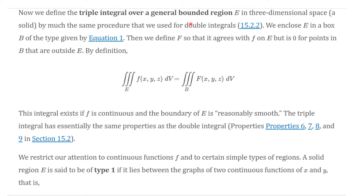Now we're going to define the triple integral over a more general bounded solid region E in three-dimensional space, by much the same procedure we used for double integrals. We enclose E in a box B of the type already described. Then we define a capital F function that agrees with lowercase f on E but is zero outside of it. This integral over the box exists, and if the boundaries of E are reasonably smooth, this triple integral has essentially the same properties as double integrals.